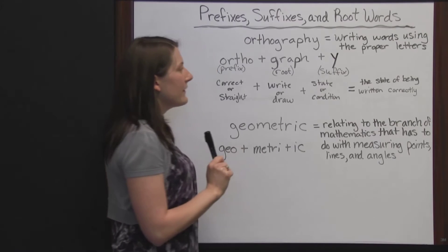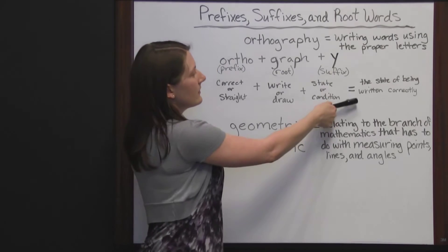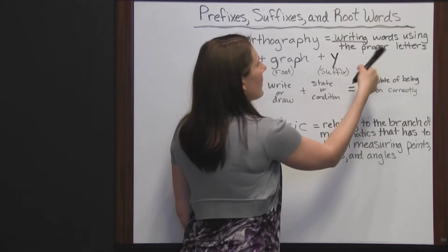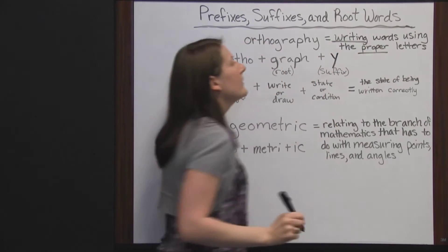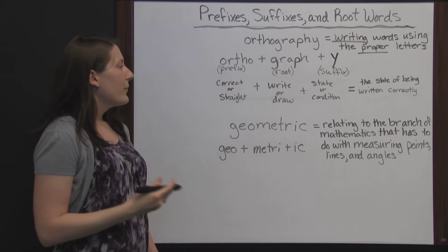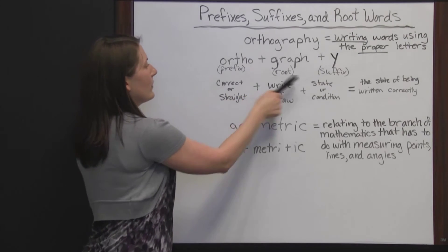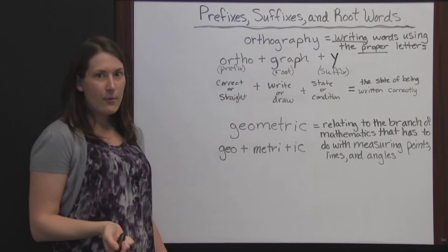The state of being written correctly, writing words using the proper letters. So you got a pretty good idea just by breaking the words down into a prefix, a root word, and a suffix, and figuring out what those meant.